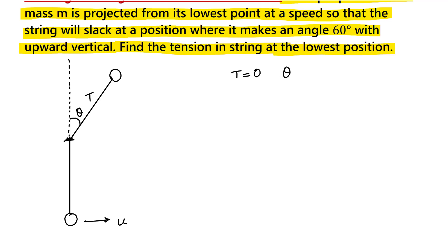It is given in the problem that theta equals 60 degrees, and at that point tension is zero. We have to find the tension when the bob is at the lowest position — let us call this tension T1. So our task is to find T1.